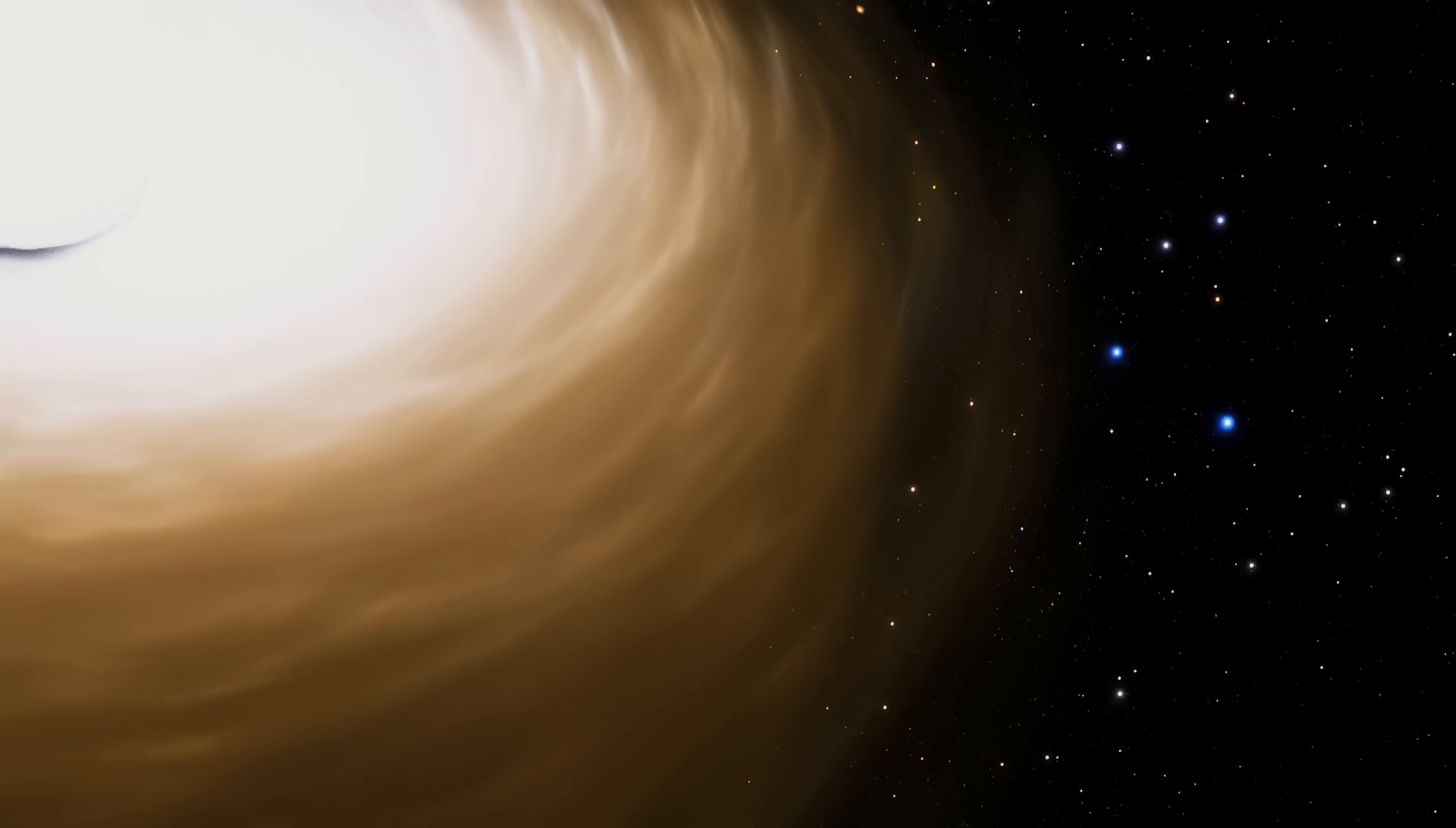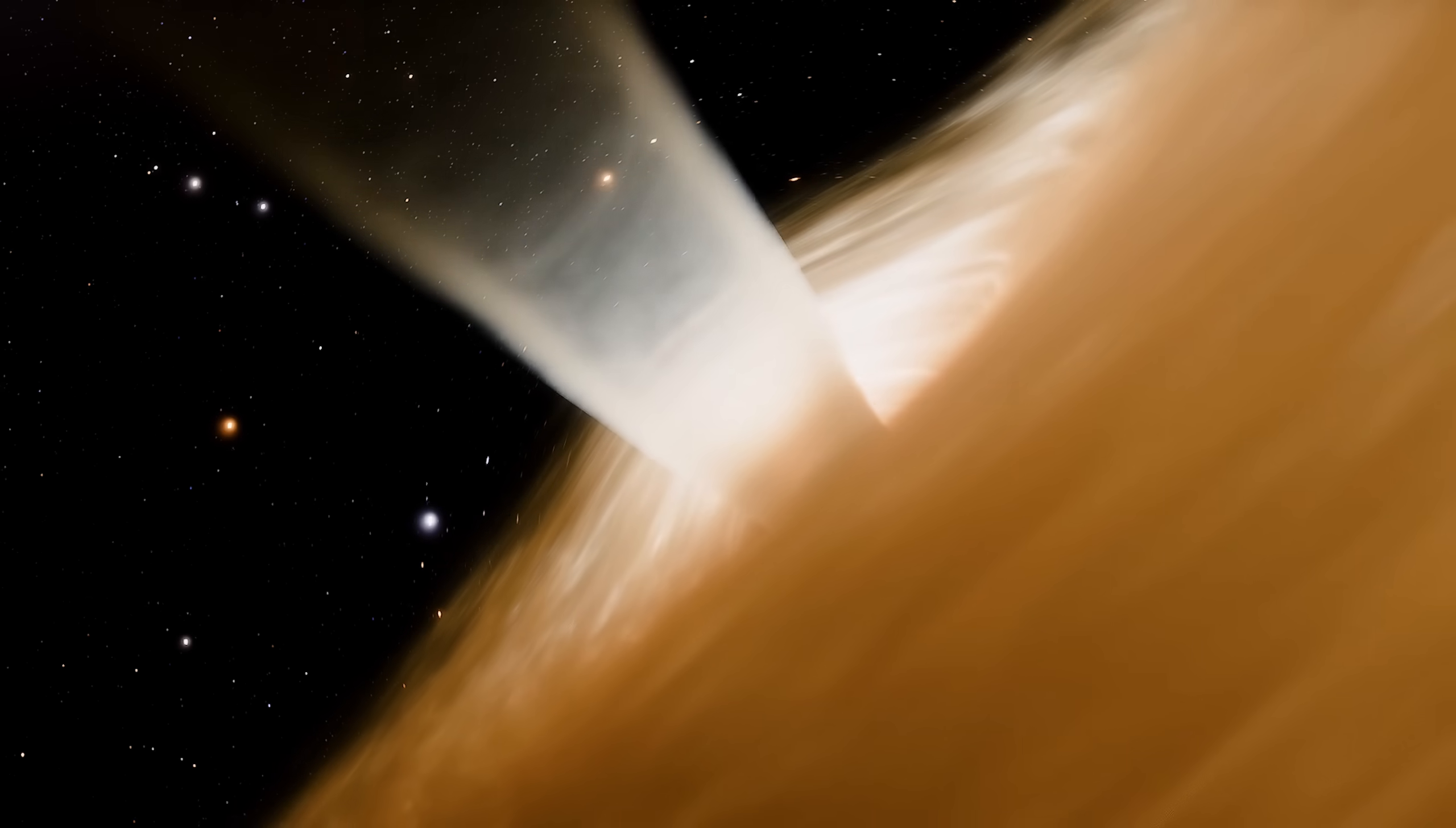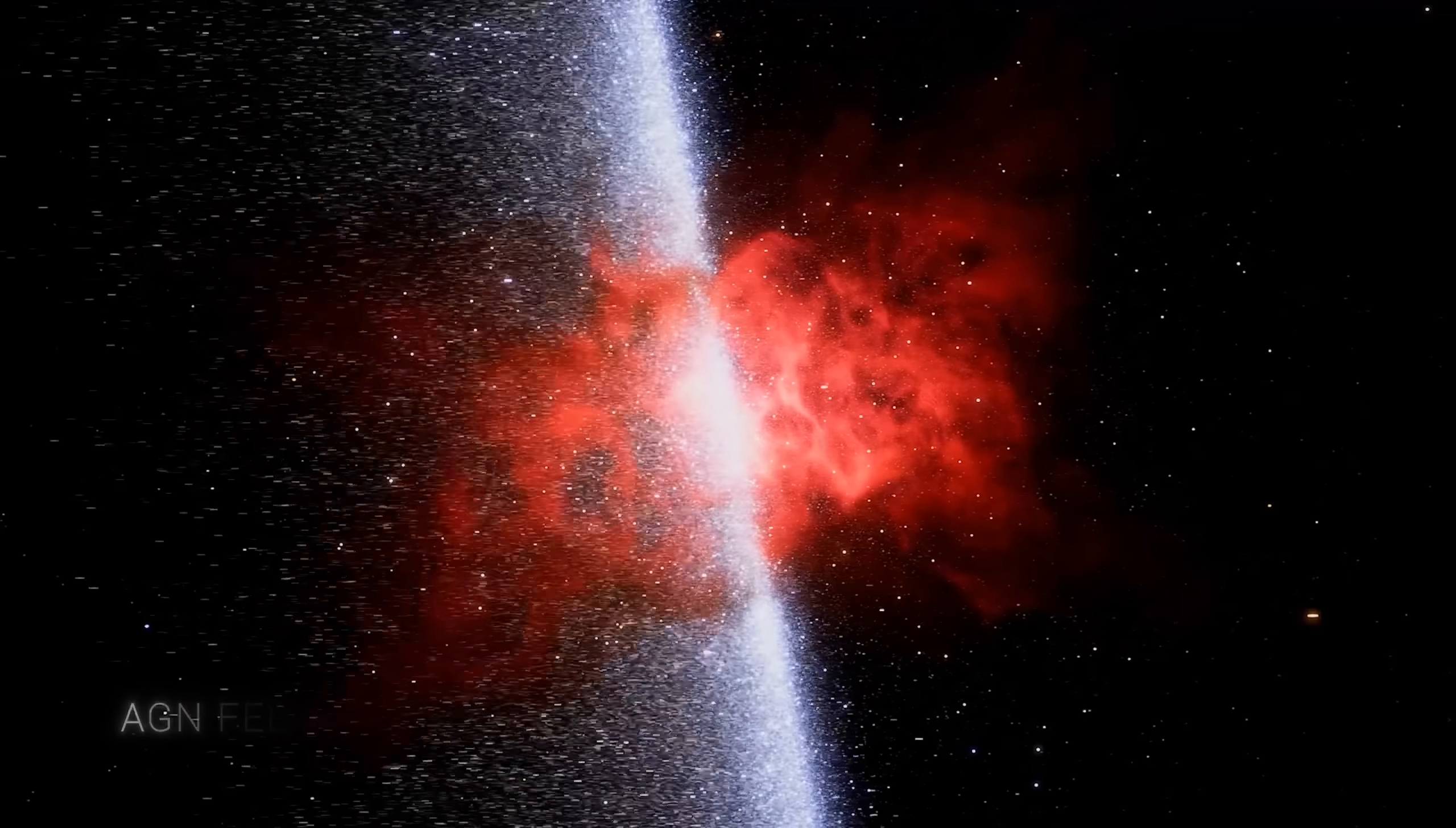But the accretion disk is not the only actor in the AGN theater. From the poles of the accretion disk fly out radio jets, streams of charged particles accelerated to near light speed by the black hole's magnetic fields. These jets are not just byproducts. They are powerful forces shaping the environment around the AGN. Colliding with the surrounding dust and gas, they create the very shockwaves that can affect the evolution of the entire galaxy. The interaction of these jets with the interstellar medium can trigger star formation in some regions and suppress it in others.